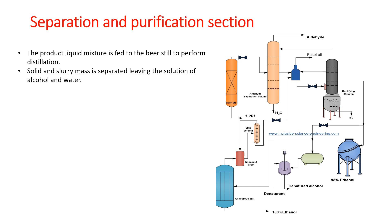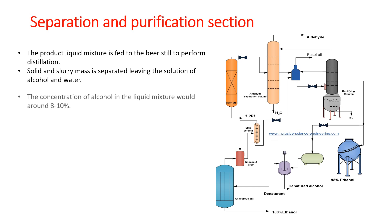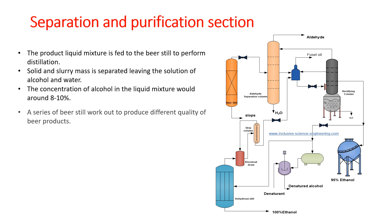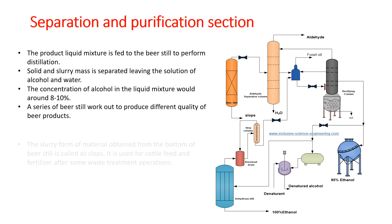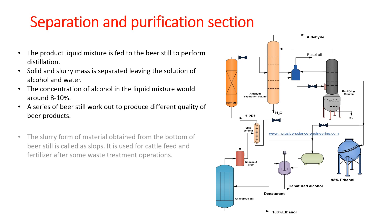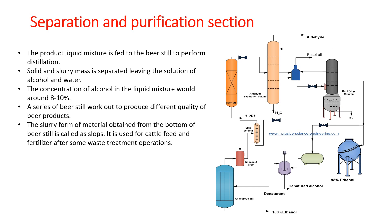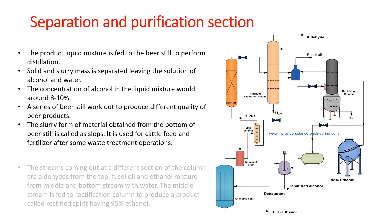The slurry material obtained from the bottom of the beer still is called slops. It is used for cattle feed and fertilizer after some waste treatment operations. The streams coming out at different sections of the column are aldehydes from the top.